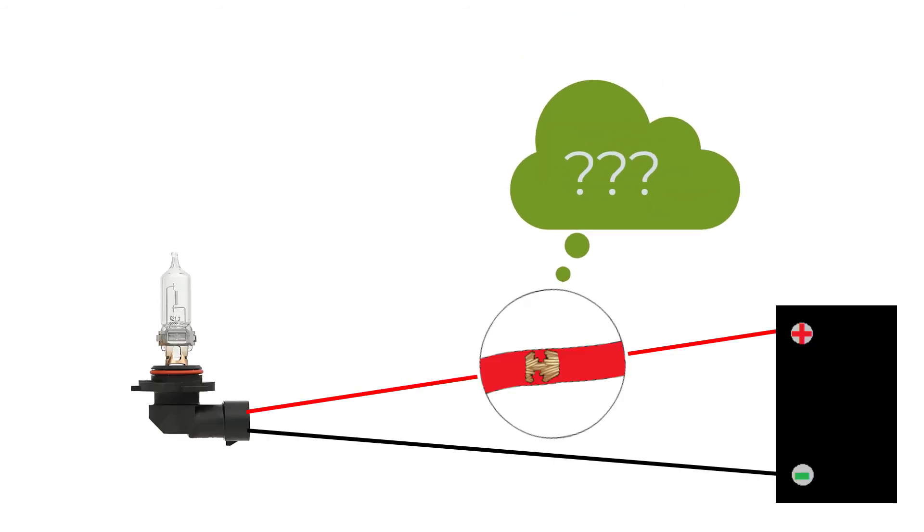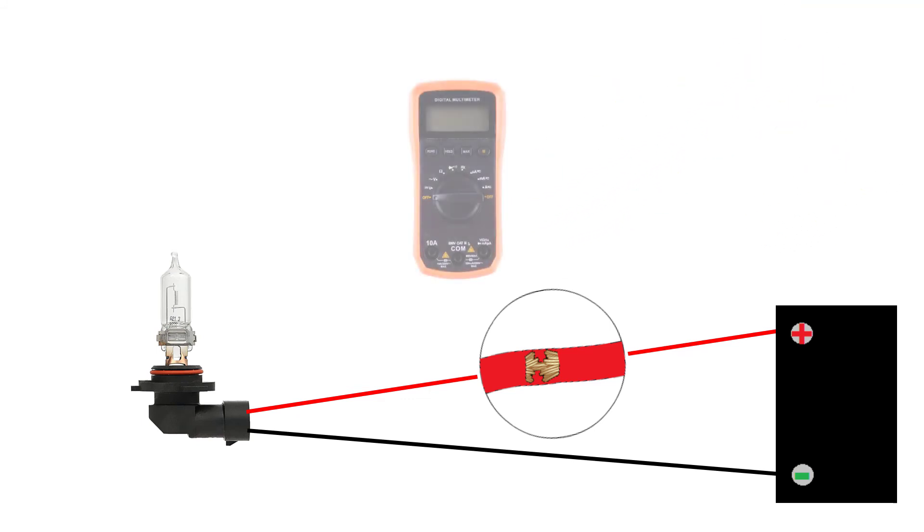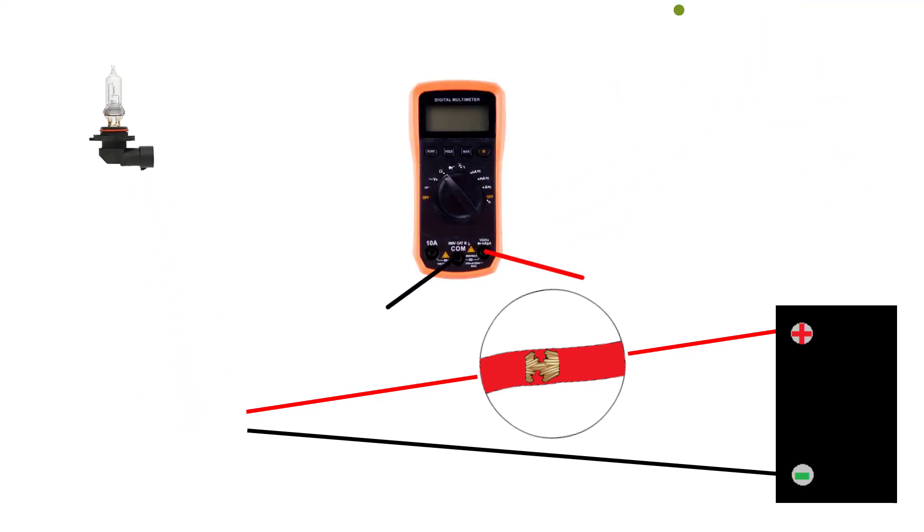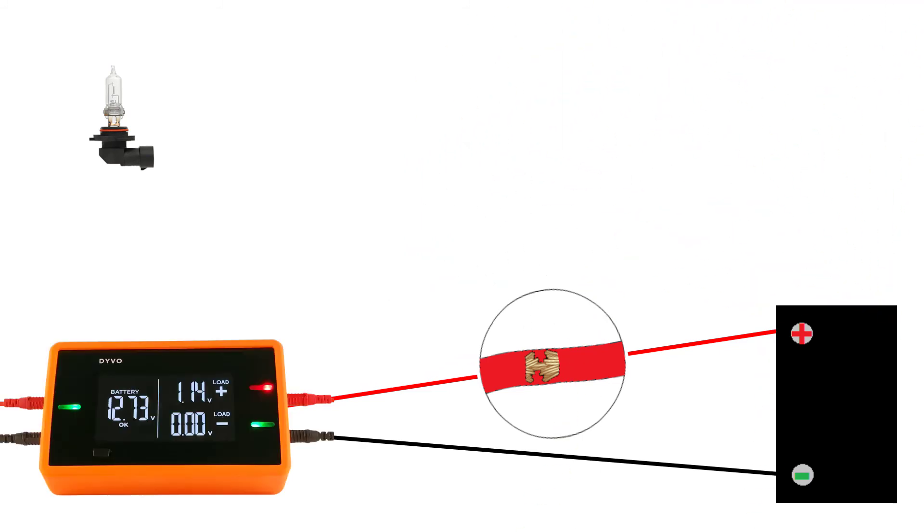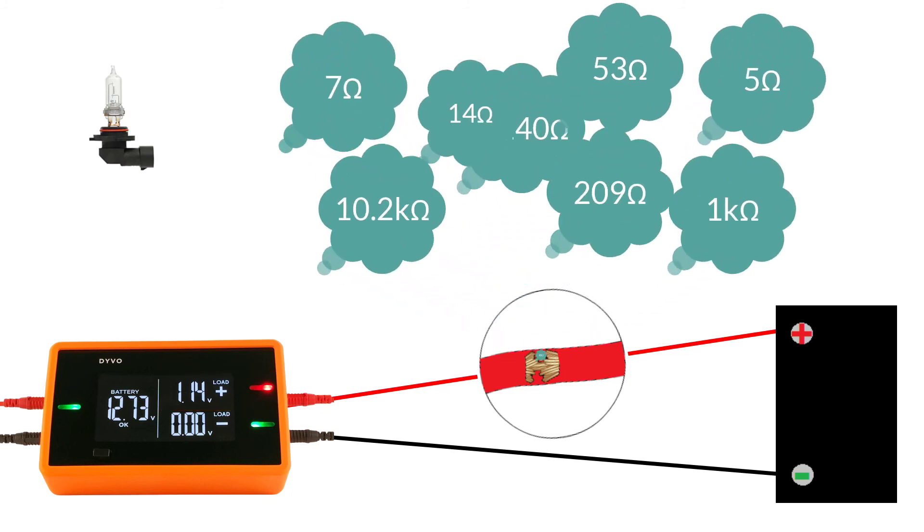For some reason, the automotive field is fixated on finding the exact resistance value in a circuit, as if there's a magical cutoff value between good and bad. Unfortunately, there is no magical number, and that's not how resistance values work. Using DEVO in seconds, we can see a red LED and only 1.14 volts on positive circuit. We know we have a resistance problem, and the exact resistance value doesn't matter.